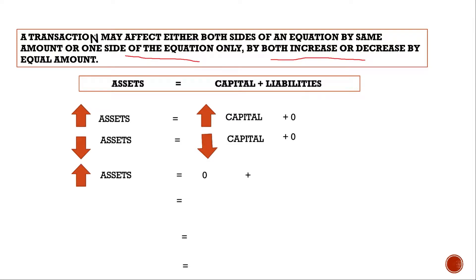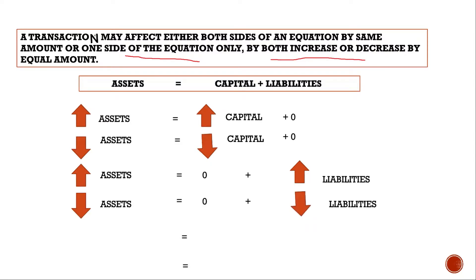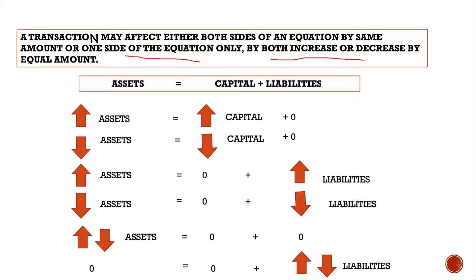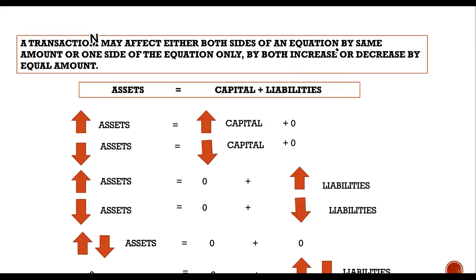If assets are rising, capital could be zero and liabilities are rising. Or assets are falling without any change in capital, but liabilities are also falling by the same amount. It might also happen there is increase and decrease in assets only without any change on the right-hand side. Also, without any change in assets, there could be increase and decrease in liabilities or in capital. It depends upon the business transaction which has been undertaken.